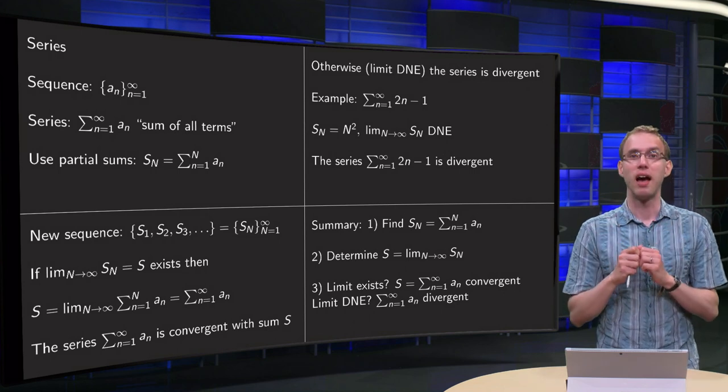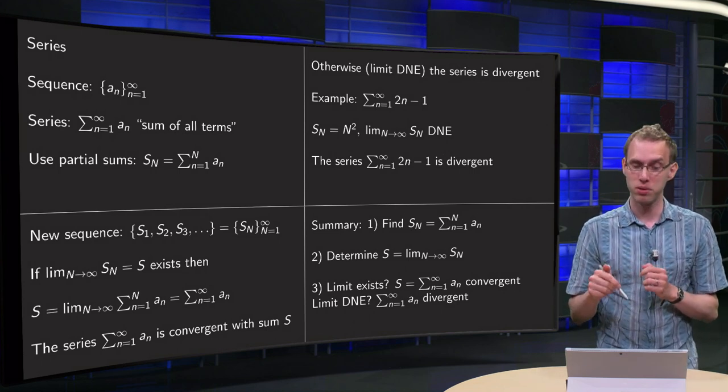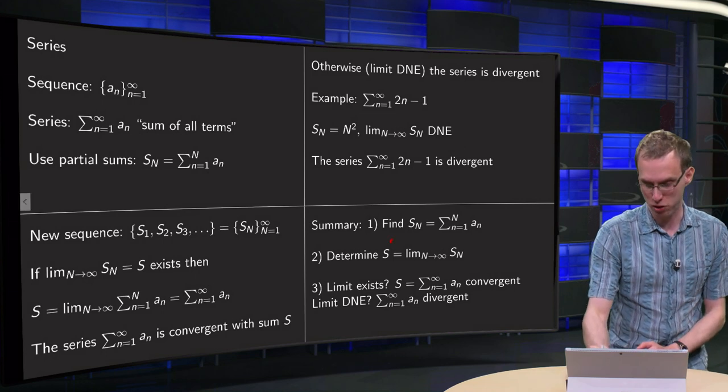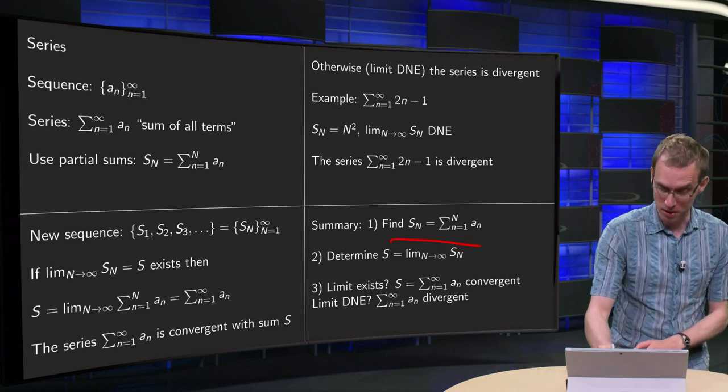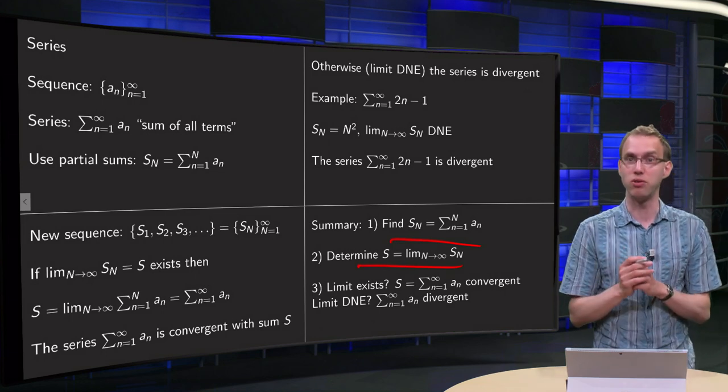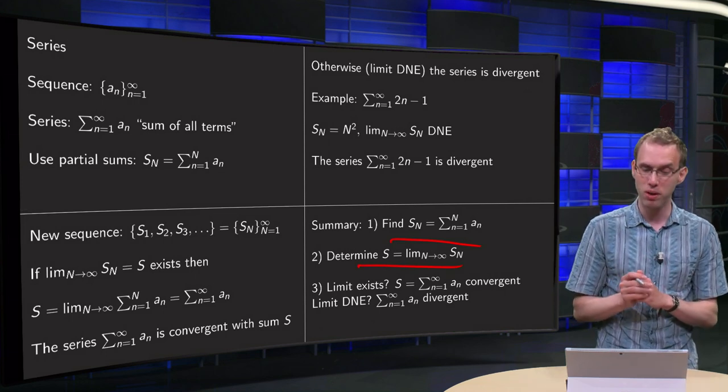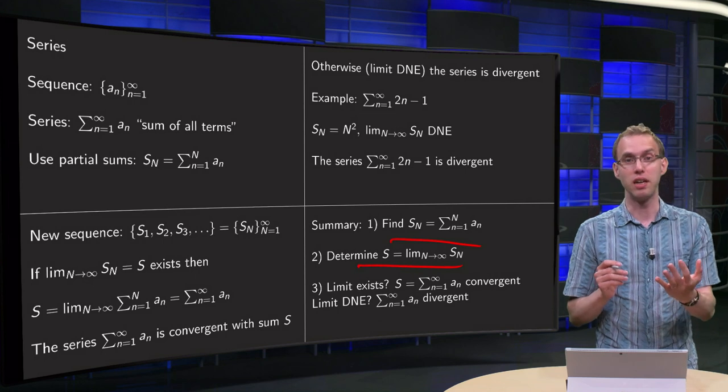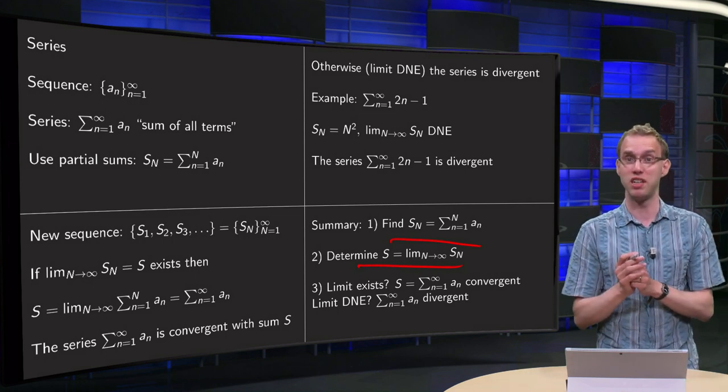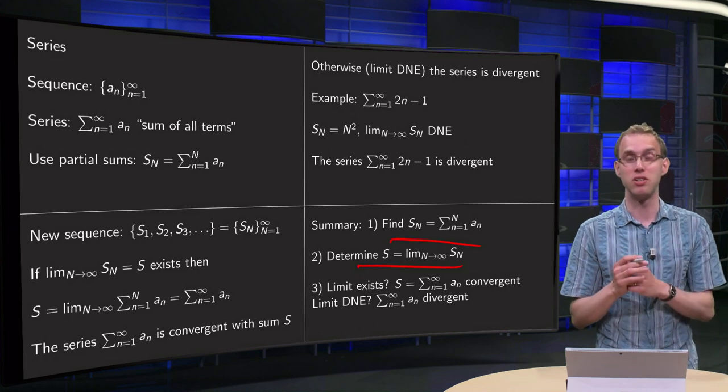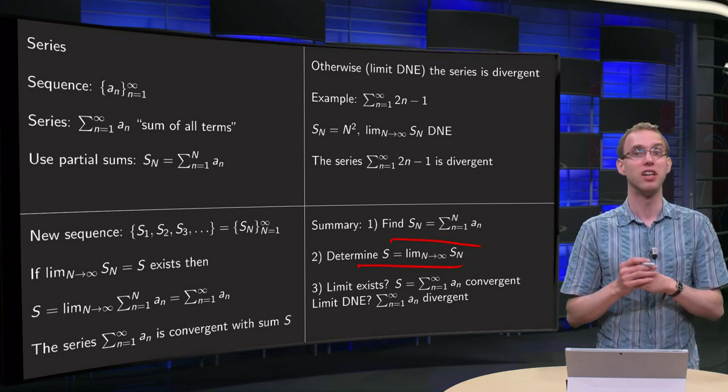So in summary, how can you add an infinite number of terms? First find the nth partial sum. That can be very difficult. Then determine the limit as N goes to infinity. Can be difficult as well. Does the limit exist? Then the series converges and the sum of the series equals the limit S. And if the limit does not exist, then the series is divergent.